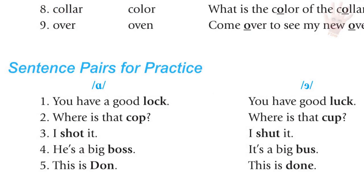Sentence pairs for Ah and Uh: You have a good lock / You have good luck. Where's that cop? I shot it. He's a big boss / It's a big bus. This is Don / This is done.